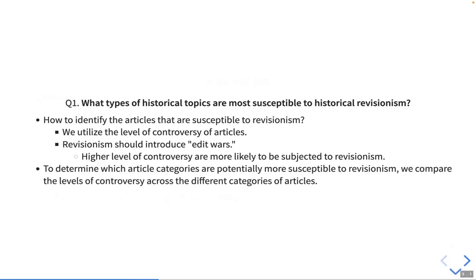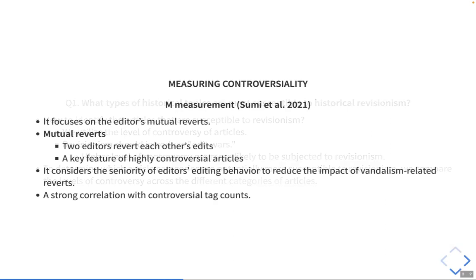Let's begin with the first question: What types of historical topics are most susceptible to historical revisionism? To identify the articles that are subjected to revisionism, we focus on the level of controversy of articles, because it is likely that revisionism introduces edit wars. We expect articles with a higher level of controversy are more likely to be subjected to revisionism. To measure controversy, we rely on M-measurement that focuses on editors' mutual reverts. Mutual reverts are a situation where two editors revert each other's edits, and it's considered a key feature of controversy.